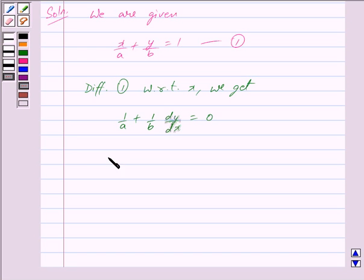This implies 1/A + (1/B)y' = 0, where dy/dx is written as y'.